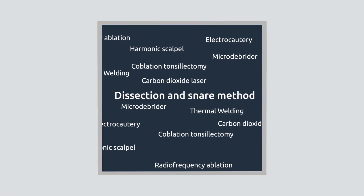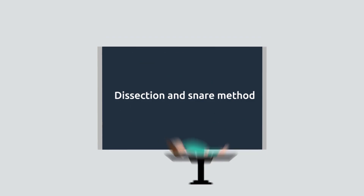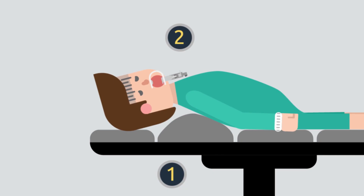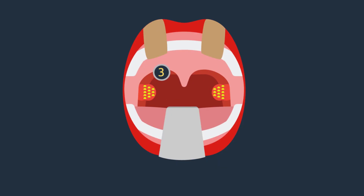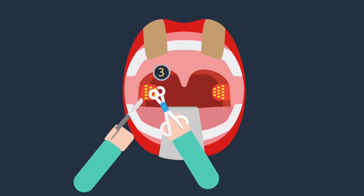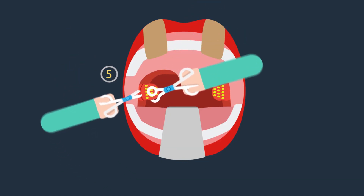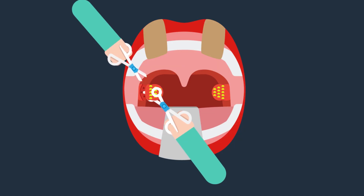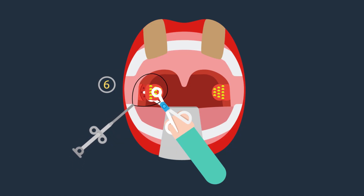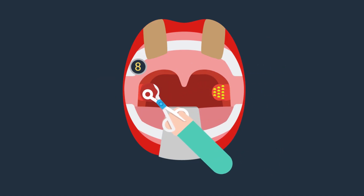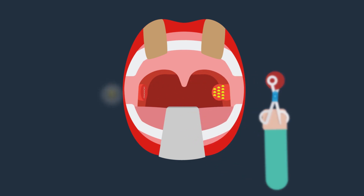How Tonsillectomy is Done — Dissection and Snare Method. There are multiple methods to perform a tonsillectomy. One of the most commonly used is the dissection and snare method. Steps: 1. Patient is placed in the Rose position. 2. Boyle-Davis mouth gag is introduced and opened, held in place by Draffin's bipods or a string over a pulley. 3. Tonsil is grasped with forceps and pulled medially; incision is made in the mucous membrane. 4. A blunt curved scissors may be used to dissect the tonsil from the peritonsillar tissue and separate its upper pole. 5. Tonsil is held at its upper pole and traction applied downwards and medially with scissors until the lower pole is reached. 6. Wire loop of the tonsillar snare is threaded over the tonsil onto its pedicle and tightened. 7. Pedicle is cut and the tonsil removed. 8. A gauze sponge is placed in the fossa and pressure applied for a few minutes. 9. Bleeding points are tied with silk. The procedure is repeated on the other side.